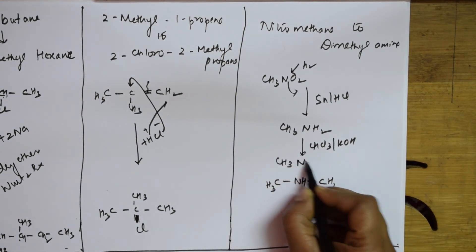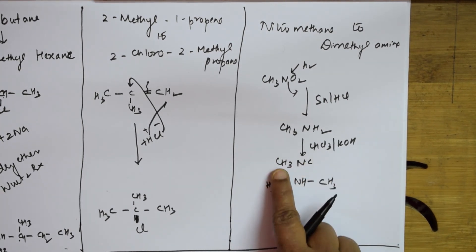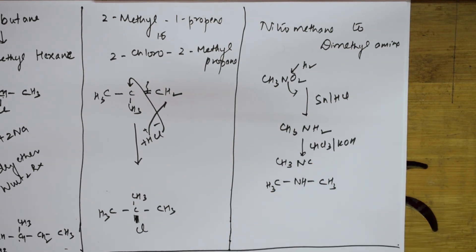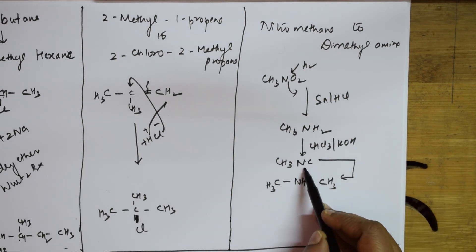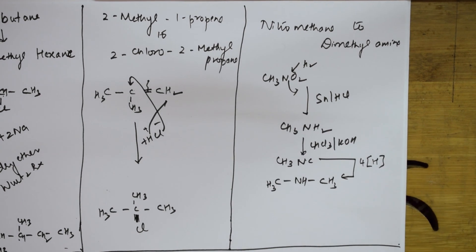Whenever you get this, the immediate thing you can do is carbylamine reaction in the presence of chloroform and KOH. Then I'm going to get CH3-NC (isocyanide) because I need that nitrogen here. That's why I did carbylamine reaction. Now CH3 is here, this carbon is here, this nitrogen is here.